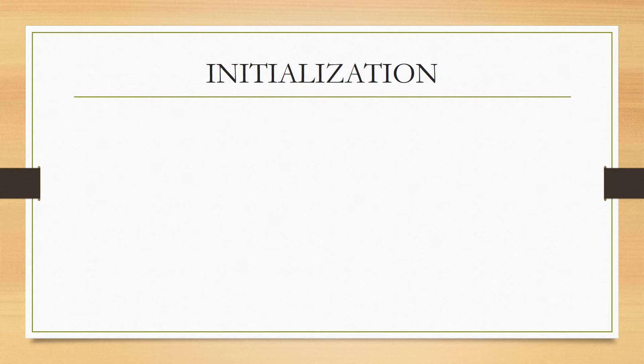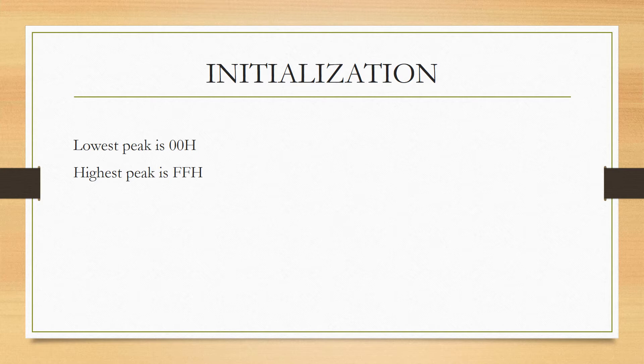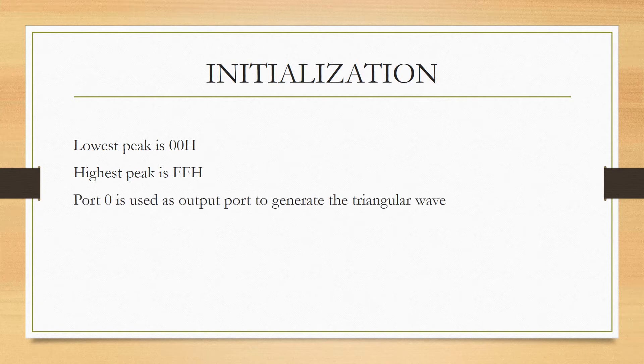Before we begin with writing the code, let us try to understand the initialization. In any triangular wave, we should have a positive peak and a negative peak. Here, I am considering the lowest possible value — the lowest peak — to be 00, and the highest peak to be FFH. This is because I am using an 8-bit microcontroller, and the maximum value the accumulator can hold is FFH. I will be making use of Port 0 as the output port to generate this triangular wave.